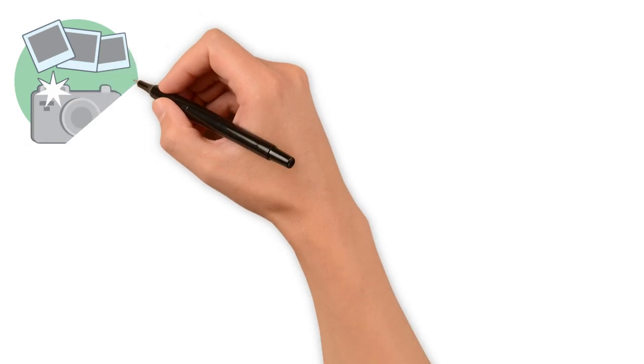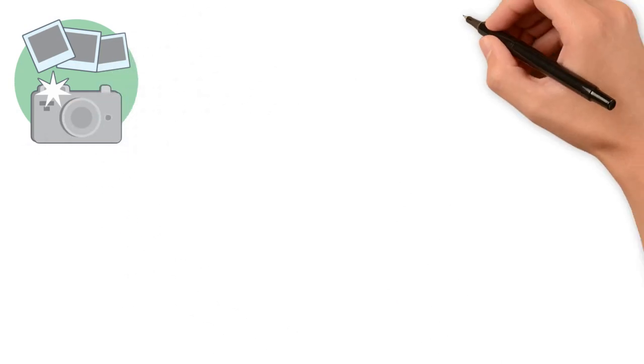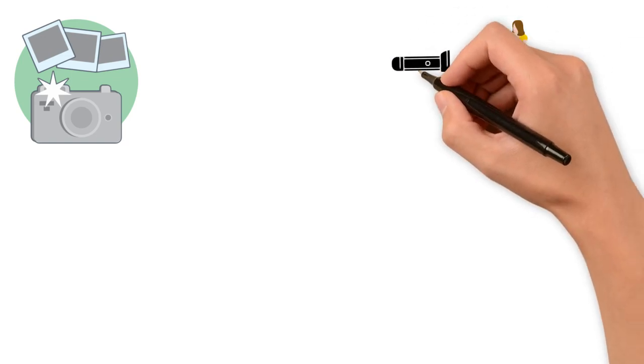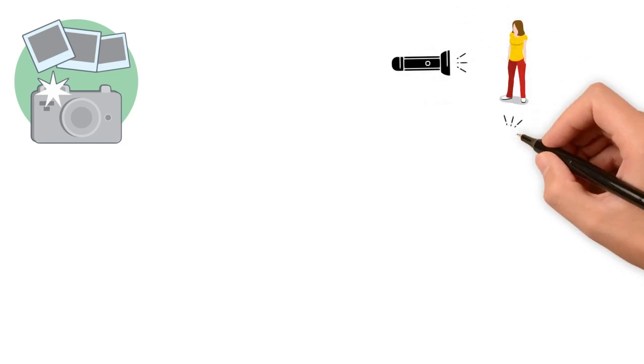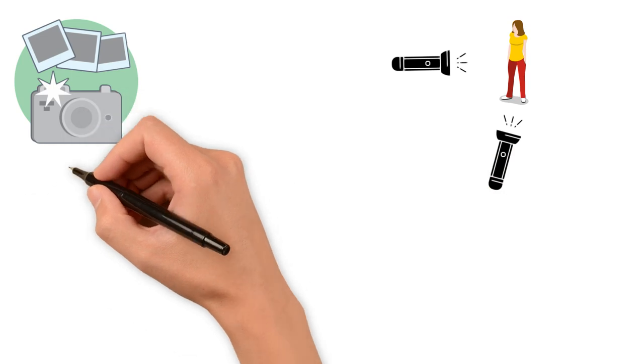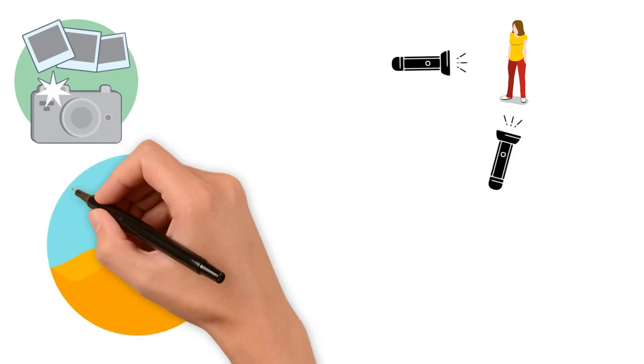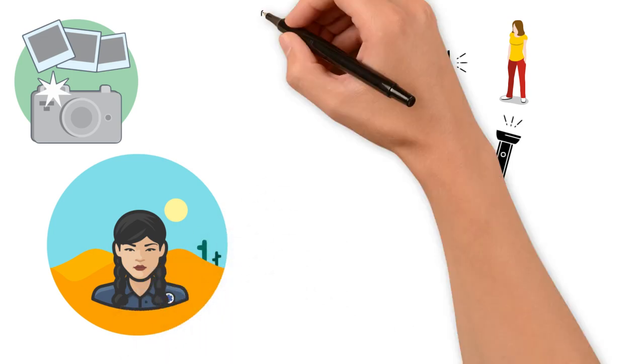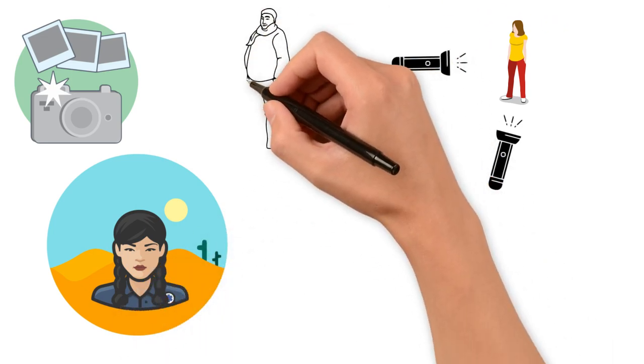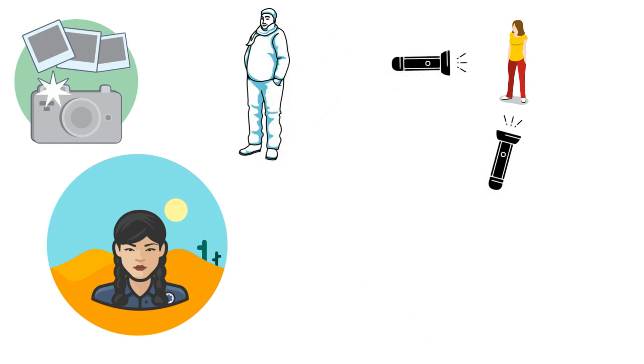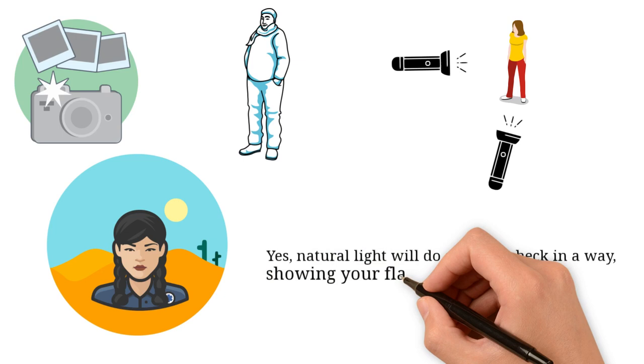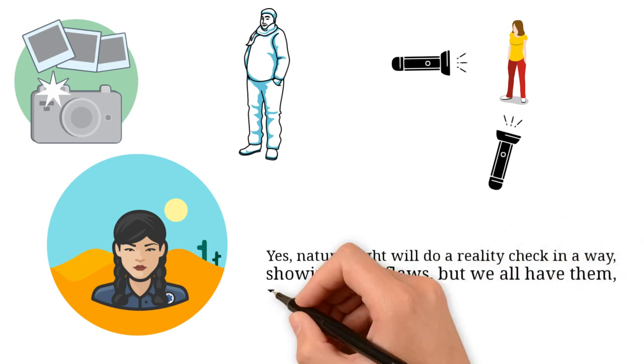Lighting is a feature that amazingly affects how people look in a picture. That is why, not by coincidence, every time you see celebrities doing photo sessions, you also see many artificial light resources around. Natural light is always the best option. It will give you a natural look, eliminating shadows, sagging and every other unflattering effect that can make you look fatter and different than you are in real life. Yes, natural light will do a reality check in a way, showing your flaws, but we all have them, don't we?